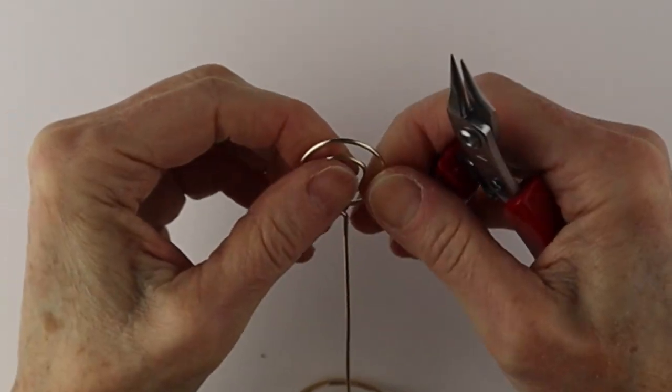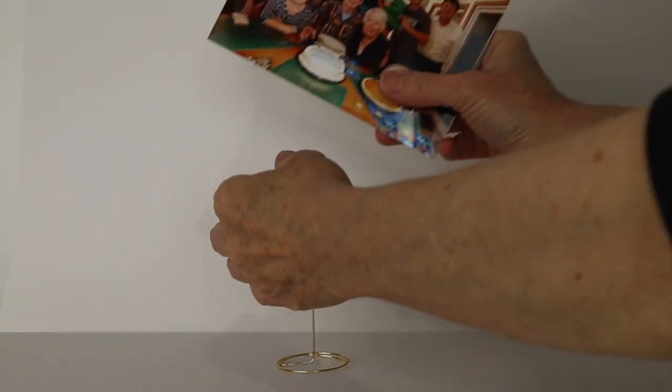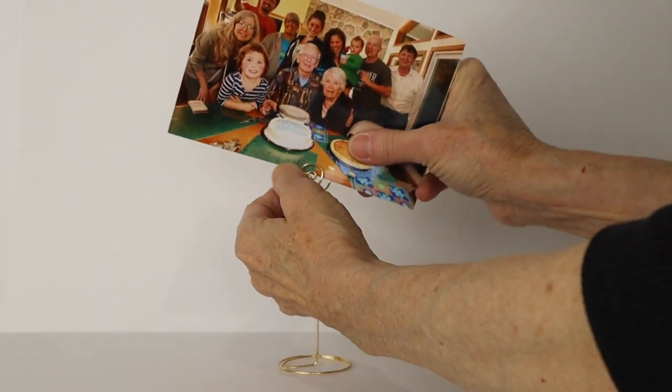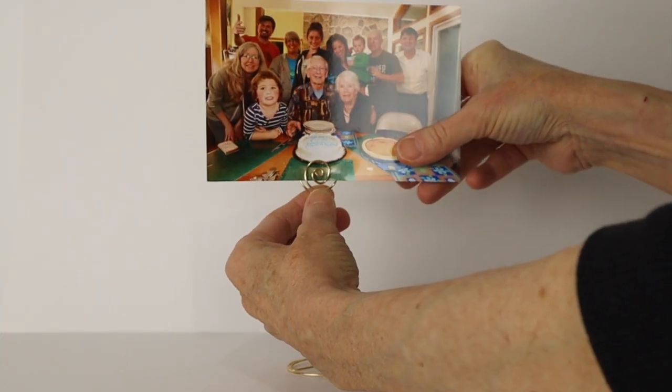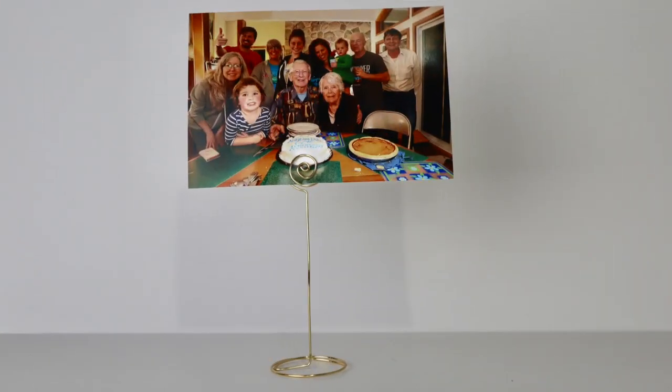Just keep wiggling it around till it's nicely centered and then it'll stand on the table and you can take your photo. This is my family at my parents 60th wedding anniversary. We're just going to stick it in there and there you have a simple stand for your photo.